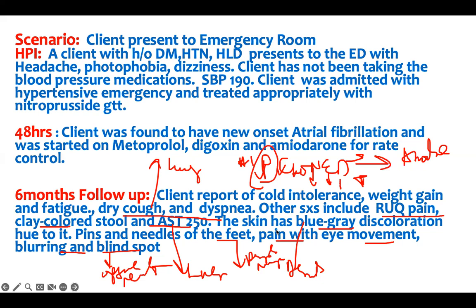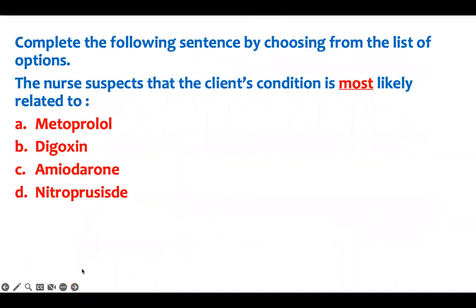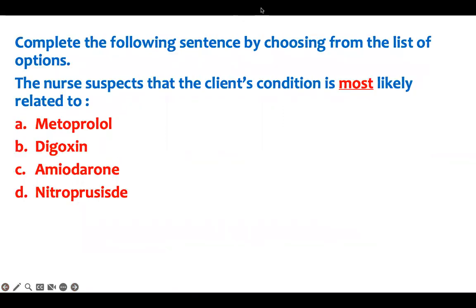I've given you all the signs and symptoms of amiodarone side effects in case form, and you have to break it down and find the answer. You know it, but you have to think about it based on what's been given. Therefore, the nurse suspects that the client's condition is most likely related to amiodarone — that is your correct answer.